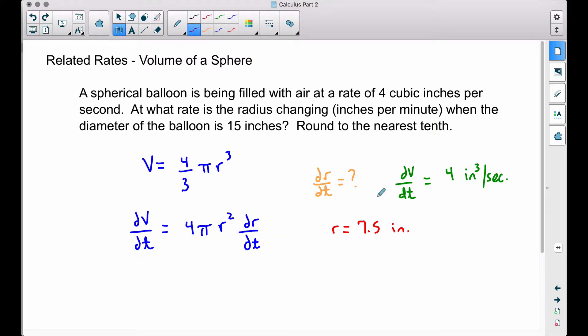Let's plug in our information. We have 4 cubic inches per second is equal to 4π times our radius squared, 7.5 inches squared, times dr/dt.